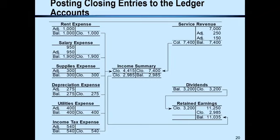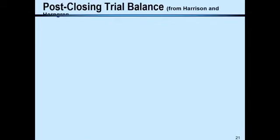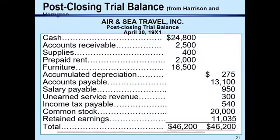After passing closing entries, the last step of the accounting cycle is to prepare the post-closing trial balance. You write the company name, the statement name — post-closing trial balance — and the date. The post-closing trial balance and balance sheet contain the same accounts. The balance sheet can be in account format or report format; in report format, current assets, non-current assets, current liabilities, and owners' equity accounts are listed vertically.